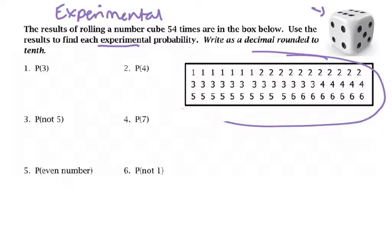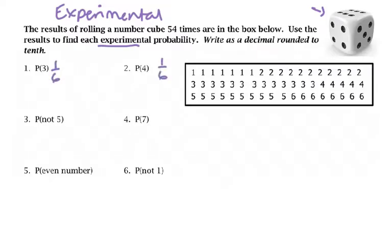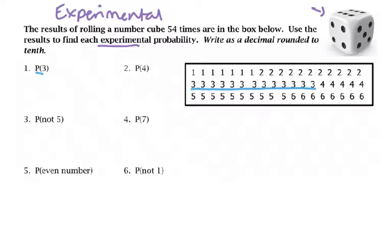If I was doing theoretical probability and asked what's the probability of getting a 3, it would be 1/6. Probability of getting a 4 — 1/6. Probability of not getting a 5 — that's 1, 2, 3, 4, or 6 — that would be 5 out of 6. Probability of 7 would be 0, impossible. But based on my experiment, I have to look at things differently. What's the experimental probability of getting a 3? I count the 3s in my results: there are 13 threes out of 54 rolls. So the next time I roll, I have a 13 out of 54 chance of getting a 3.